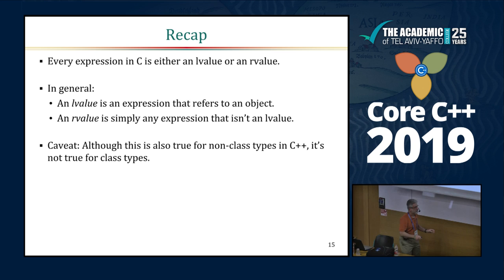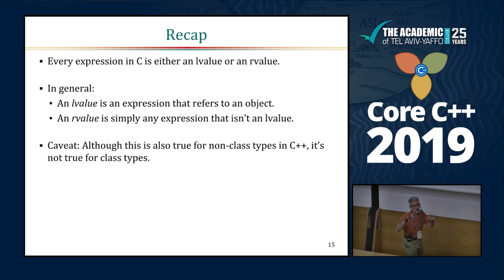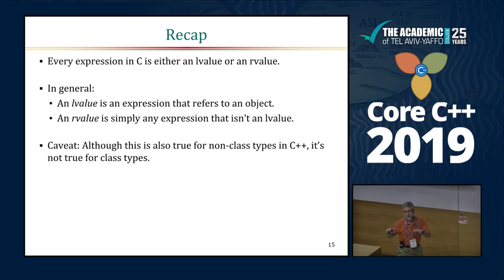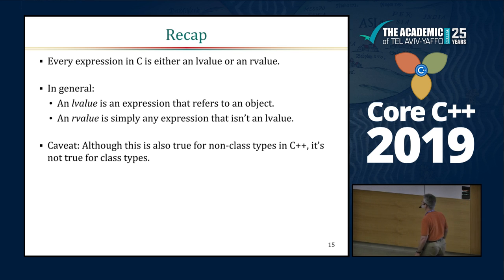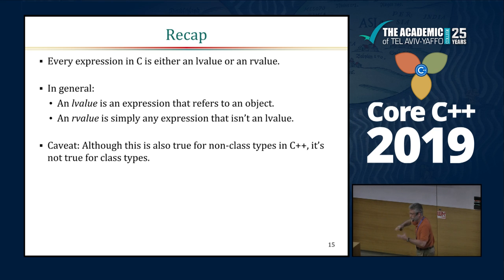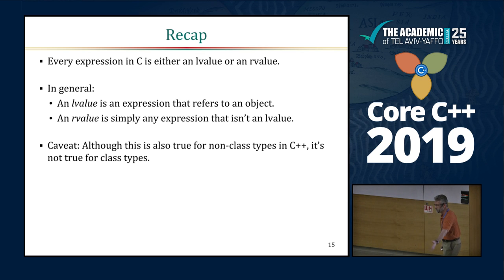The brief recap — at a high level, this was true until C++11: every expression in C and C++ is either an L-value or an R-value. An L-value is any expression that designates an object, and an R-value is anything that doesn't.